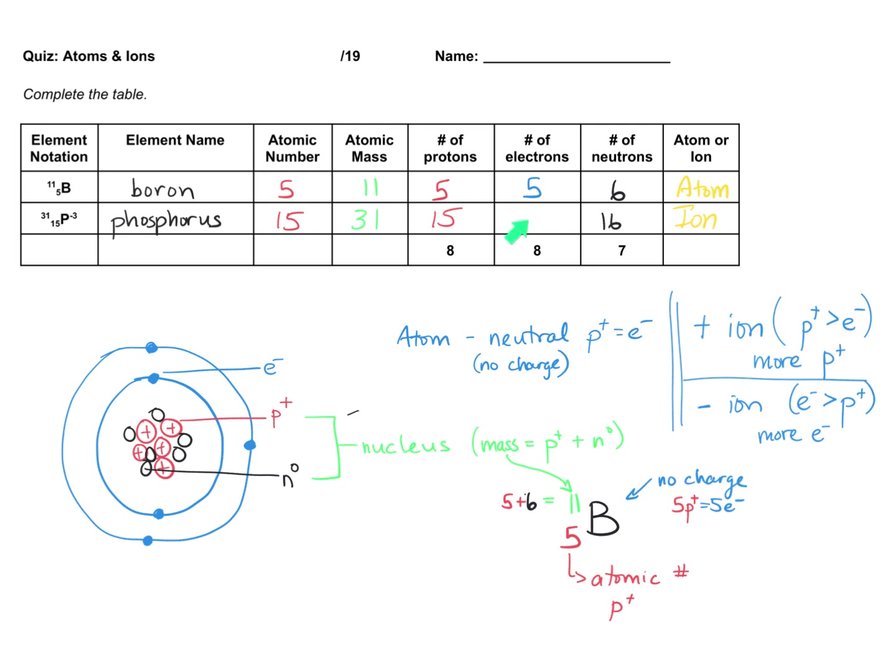Okay, so all we have left to do here are the electrons. I've got 15 protons, and the charge on the ion is negative 3. So there should be more electrons than protons. How many more? Well, 3 more, because the charge is negative 3.